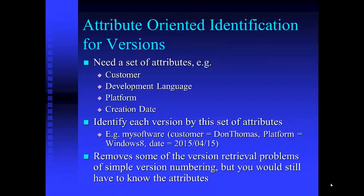Attribute-oriented identification for versions: you can have a set of attributes where the combination of attributes is unique. For example: customer Don Thomas, platform Windows 8, delivery date April 15, 2015. This removes some version retrieval problems of simpler version numbering, but you still have to know all the attributes and it can result in pretty long release names.